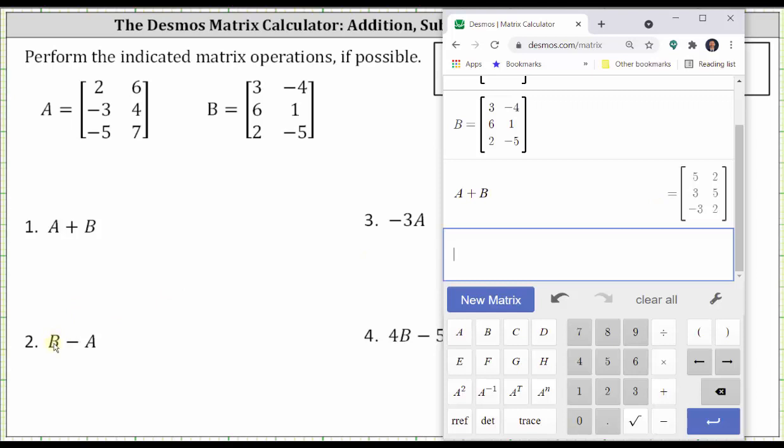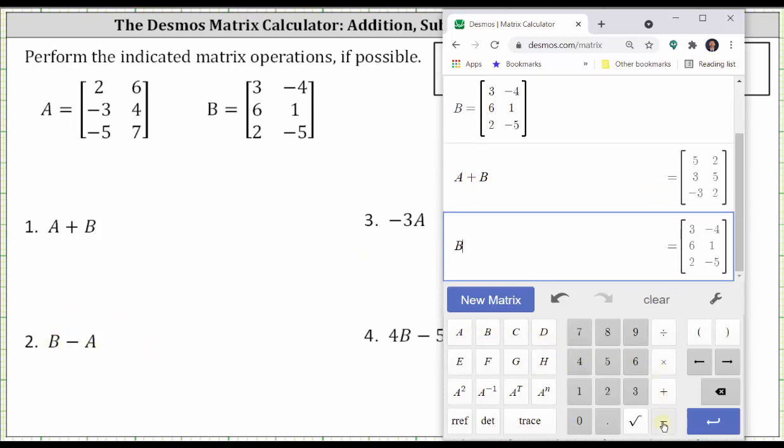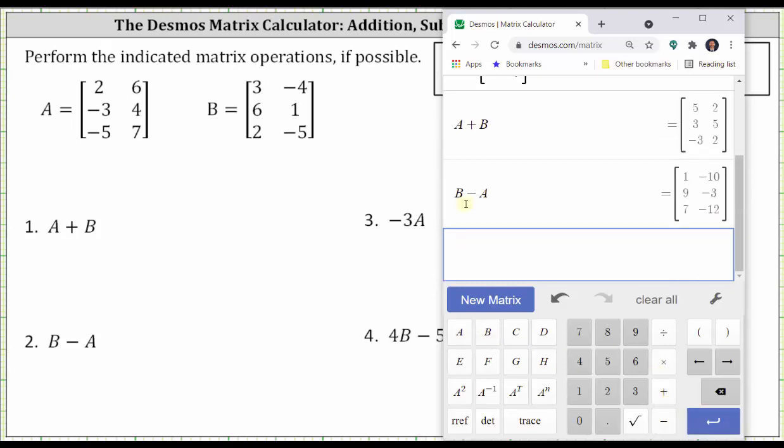Let's also determine matrix B minus matrix A. B minus A, enter. And now we have matrix B minus matrix A. Let's go ahead and record these two.